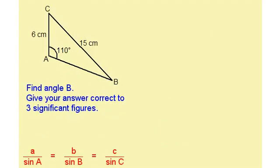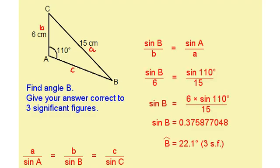Here's a second question for you to try. Press pause and have a go at it. When you're ready for the answer, press play. The first thing you should have done was realise that we need A and a, so we need this part, and B and b, so we need this part and not this one. You then need to rearrange this to give you this. This is the answer that you should have got.